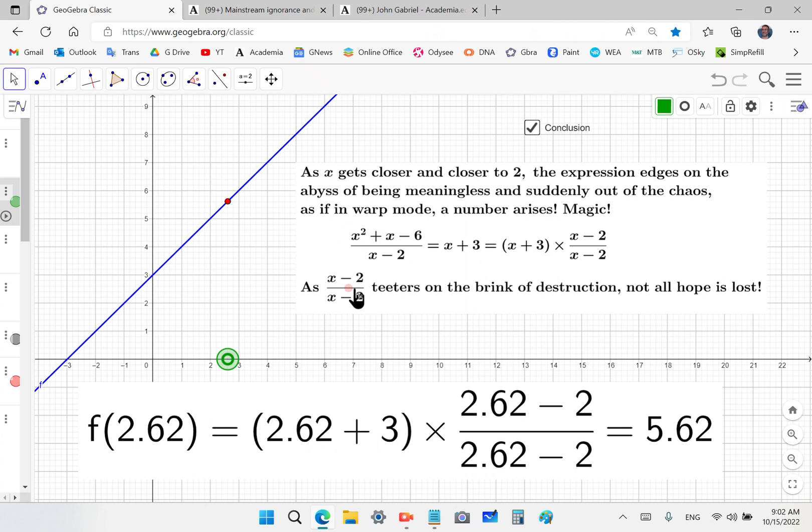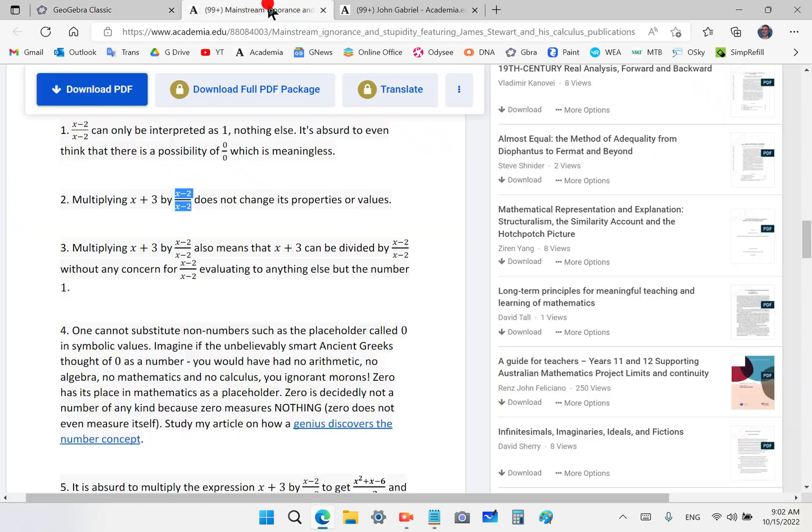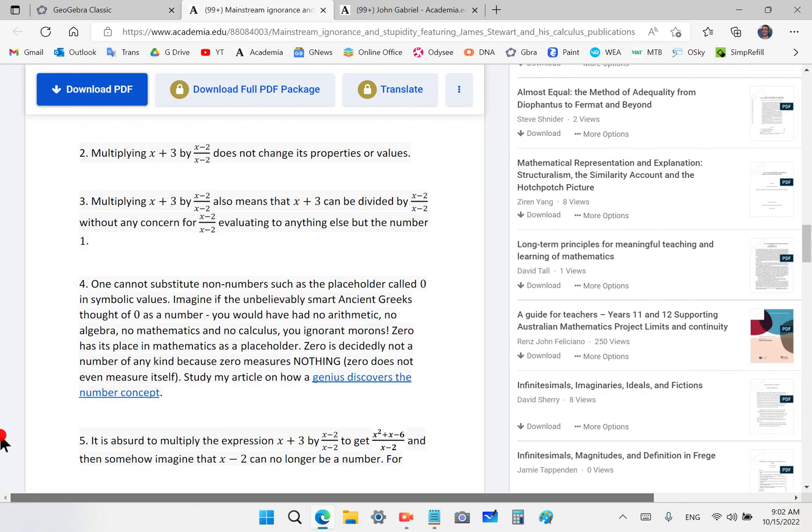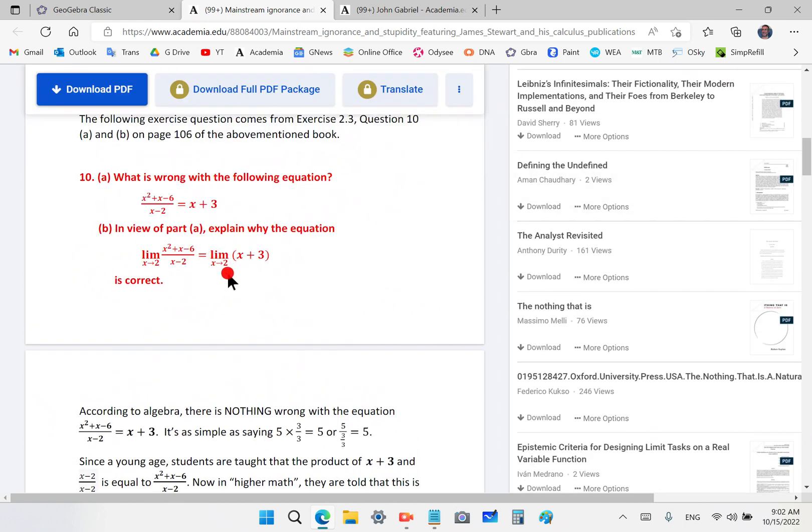So now coming back to this here, as x minus 2 over x minus 2 teeters on the brink of destruction, not all hope is lost. Suddenly out of the confusion, five arises, but how does five arise? Suddenly you can put two in it. So you cannot put two in the expression here, but you can put it in here. See, that's essentially what they do when they deal, when they try to peddle this bullshit to you. Do you understand this limit bullshit? That's exactly what they're trying to peddle to you. There's nothing else to it.